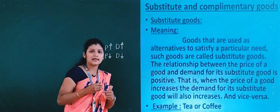Now let's see the meaning of complementary goods. Goods that are consumed together to satisfy a want — such goods are called complementary goods. Complementary goods are consumed together, whereas substitute goods are not consumed together because they are consumed as an alternative. Tea and coffee are not consumed together — you may choose tea or coffee — that is substitute goods.